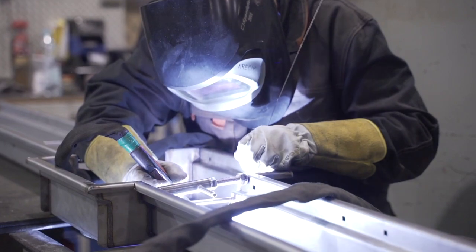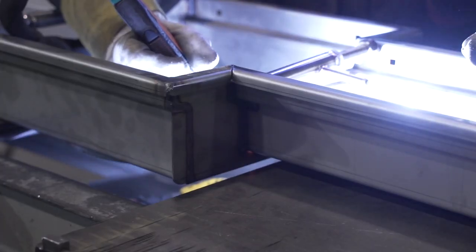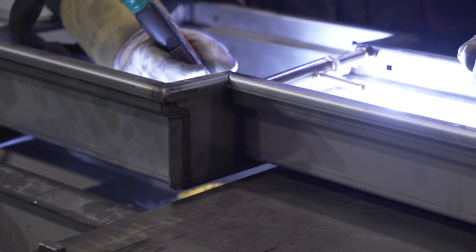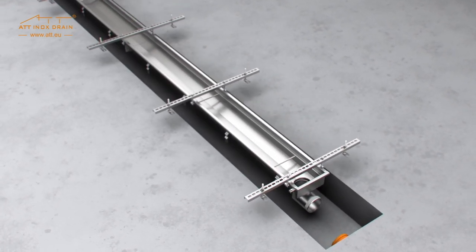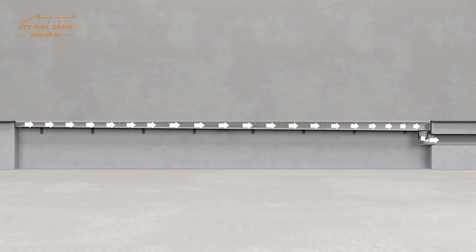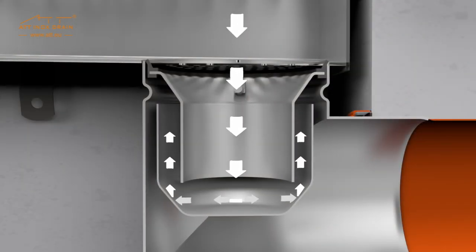Speaking of water, as mentioned above, ATT manufactures drainage systems, including linear systems, which consist of channels of various shapes and inlets that allow for draining. ATT also offers point drains. Let's discuss how the drainage systems work.